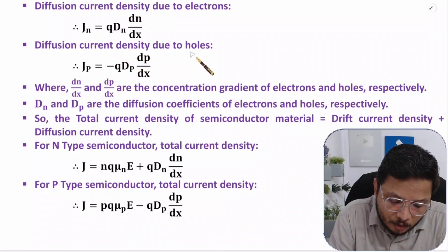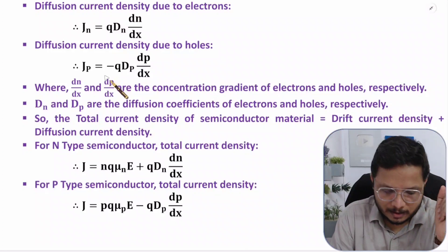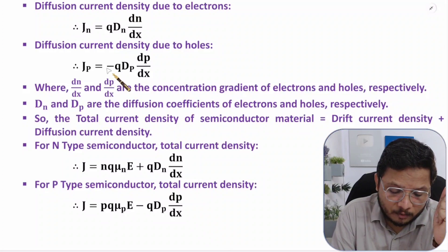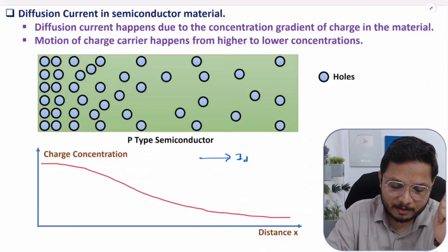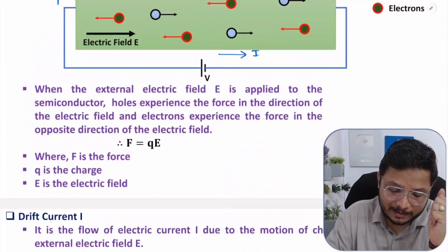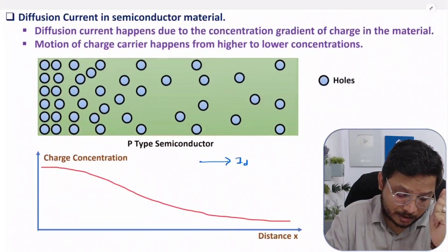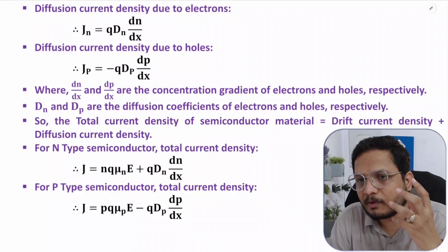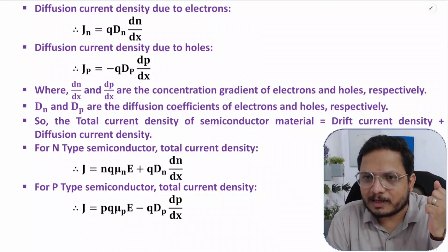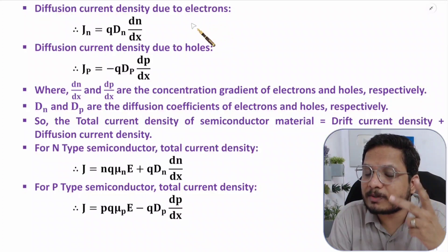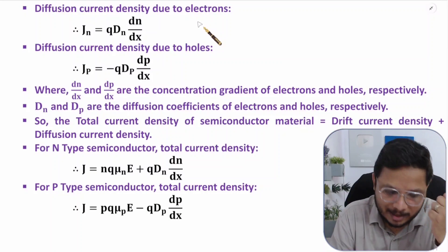Diffusion current density for holes is: Jp = −q·Dp·(dp/dx), where Dp is the diffusion coefficient of holes and dp/dx is the concentration gradient of holes. You might wonder why there is a minus sign here. When you talk about the charge polarity of holes, it is opposite compared to electrons. With diffusion current you don't have a preset assumption of direction of holes and electrons movement — carriers move from higher to lower concentration. Since electron polarity is negative and hole polarity is positive, if you consider electrons' polarity as positive then holes' polarity must be considered as negative — that's why the minus sign is there.